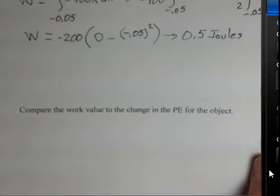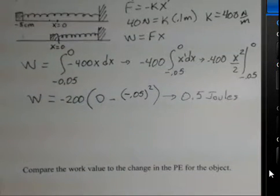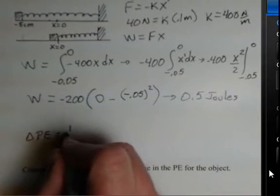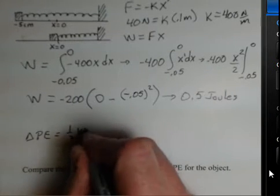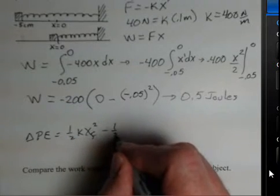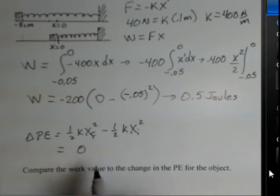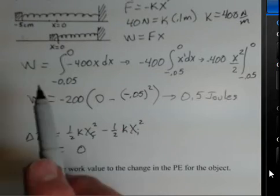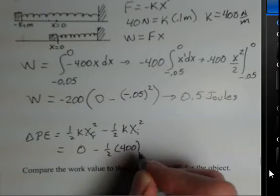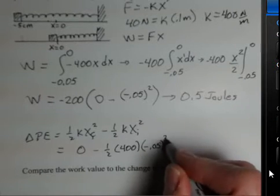Let's take a look at the change in potential energy for this situation. I'm going to do the work up here so you can still see the spring. The change in potential energy is the final potential energy minus the initial potential energy. The x final is 0 - we're ending at the equilibrium point. We have 1/2, 400 is our force constant, and our initial was minus 0.05.